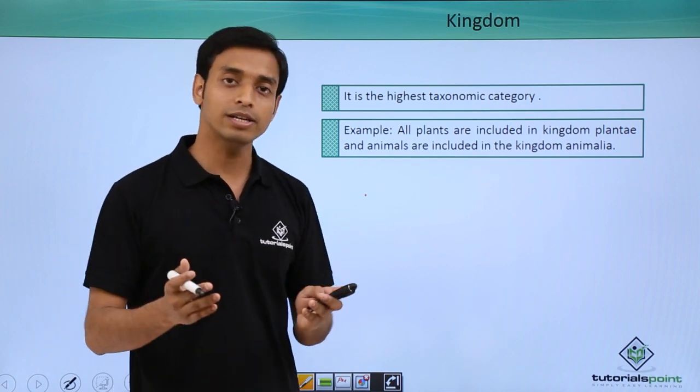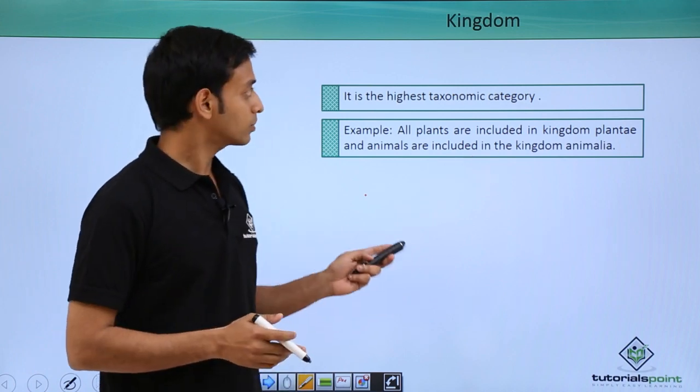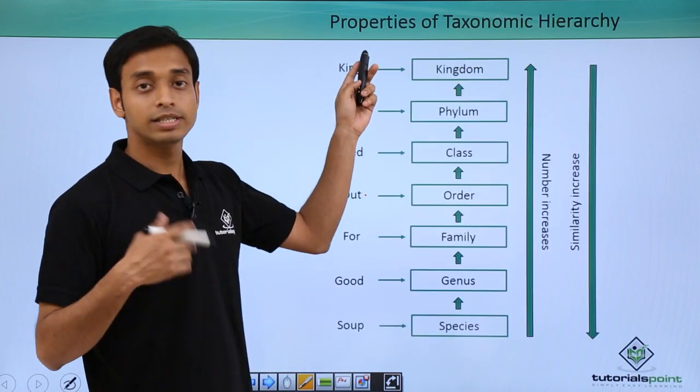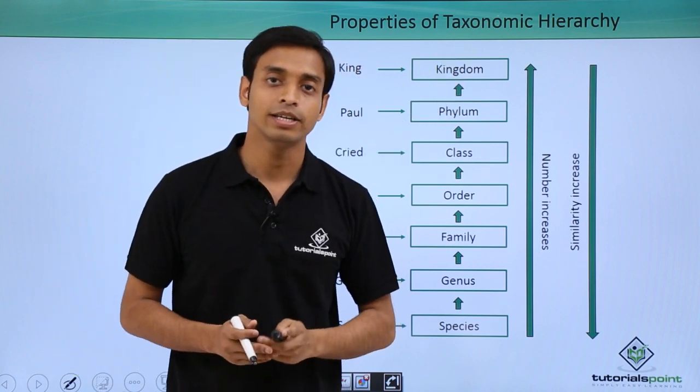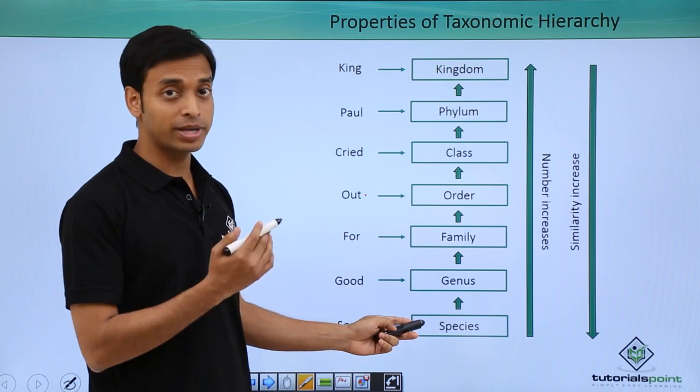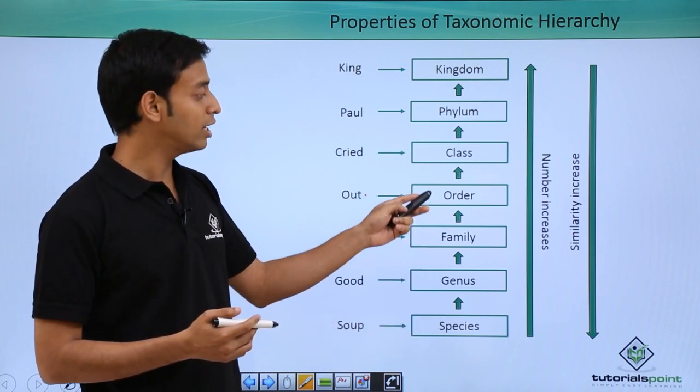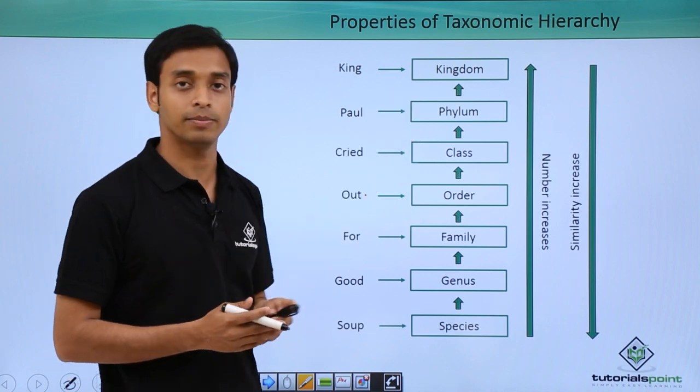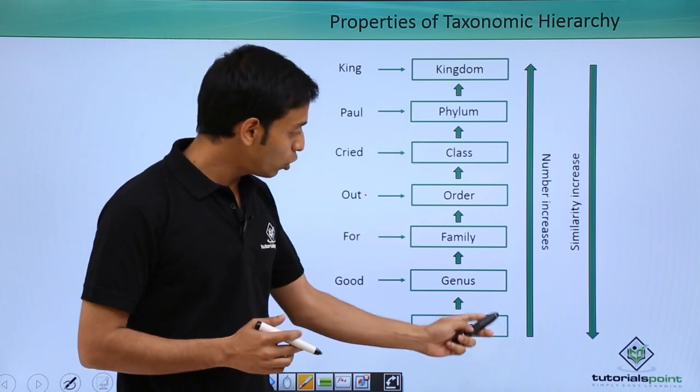Now let's talk about some of the properties of taxonomic hierarchy. Let's revise once more: species, genus, family, order, class, phylum, and kingdom. If we look into the properties, if we go in this order like lower category to higher category, then the number of species or the number of individuals in each of these groups starts increasing.